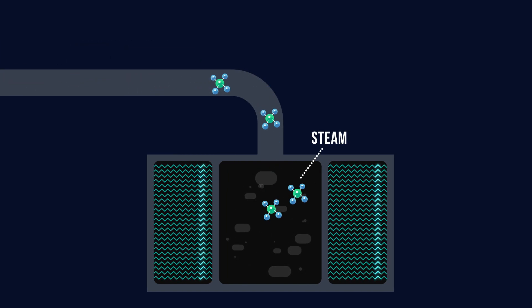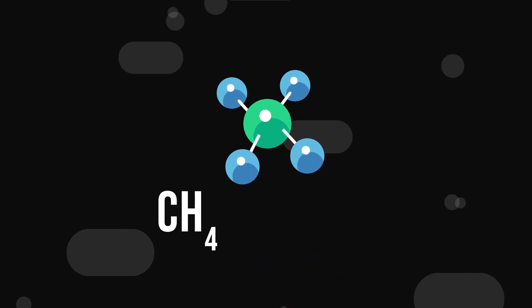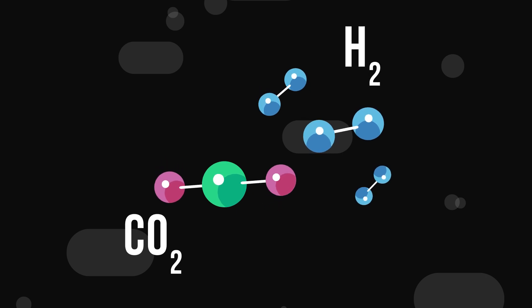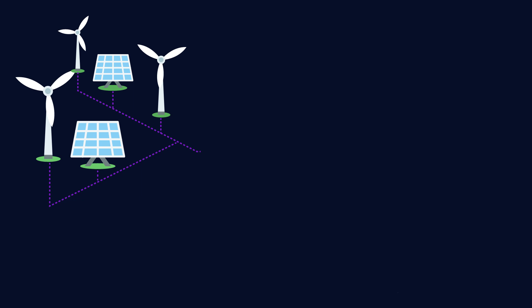But this also means that the carbon from the methane is separated, which reacts with oxygen to produce CO2 and contributes to global warming. We can also use renewable electricity to power a process called electrolysis.